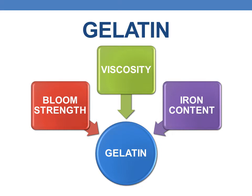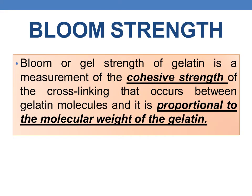The three characteristic triads are the bloom strength, viscosity, and iron content. Coming to bloom strength: bloom strength or gel strength of gelatin is the measurement of cohesive strength — the cohesive strength of cross-linking that occurs between the gelatin molecules. It is usually proportional with the molecular weight of the gelatin.